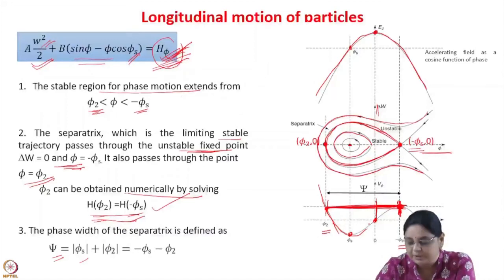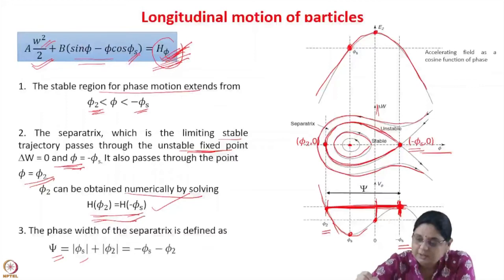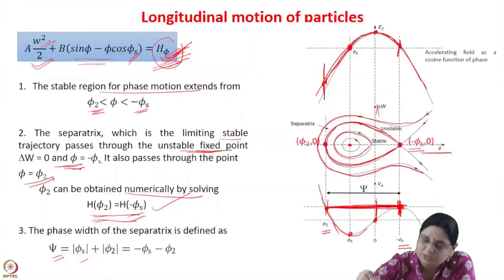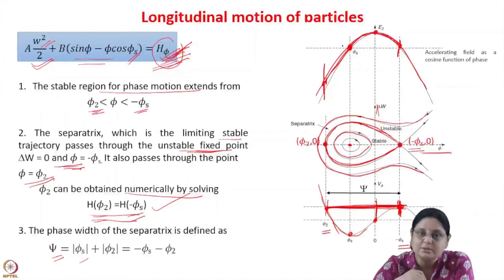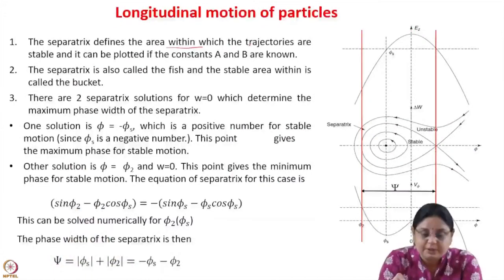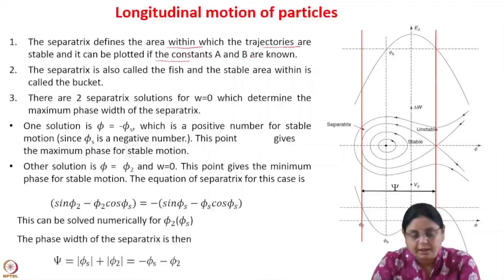The phase width of the separatrix is defined as psi, which is the modulus of phi_s plus the modulus of phi_2. This gives the total phase width of the separatrix. The particles that lie within this will execute stable motion. For a given synchronous phase minus phi_s, the particles with phases lying between minus phi_s and phi_2 will execute stable oscillations around the synchronous particle.